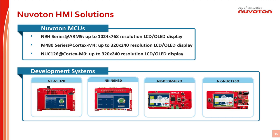The second is the N480 series, Cortex-M4 core, up to 192 MHz core speed, supporting up to 320x240 resolution display. This is the middle-end solution. The third is the NUC126 series, Cortex-M0 core, up to 72 MHz core speed, supporting up to 320x240 resolution display. This is the low-end solution.